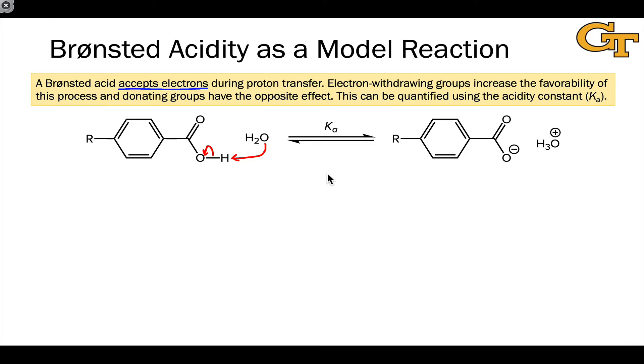Would it go up? Would this compound be more acidic with an electron withdrawing group right here? Or would it go down? Would the compound be less acidic with an electron withdrawing group right here? Pause the video and think about this for a couple of minutes before moving on.